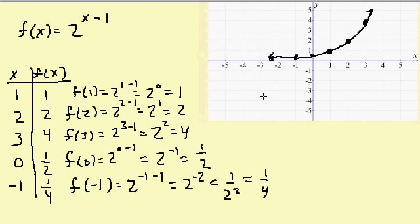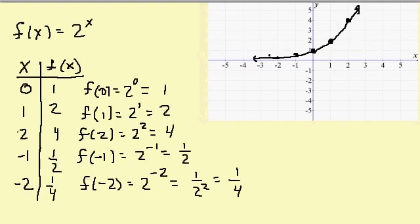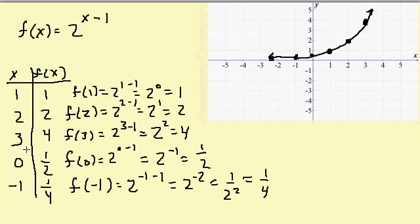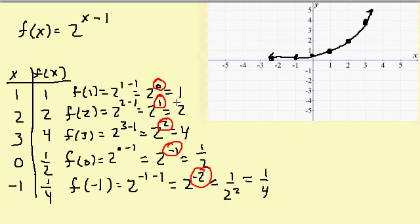Now let's look at the x values I chose. In the first example, the exponents I ended up with were 0, 1, 2, negative 1, and negative 2. In the second example, I chose different x values, but I also ended up with exponents 0, 1, 2, negative 1, and negative 2. You don't have to choose x values that give you those exponents, but I think it's the easiest approach, because you won't be dealing with large y values. So whenever you're graphing exponential functions, try to pick x values so you get 0, 1, 2, negative 1, and negative 2 as the exponents.